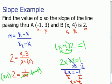And so the answer to this would be that point B would have to be (-1/2, 4) for the slope of this line to be 2.